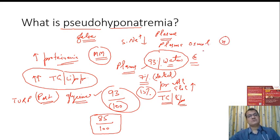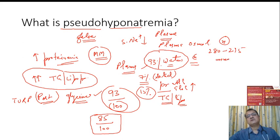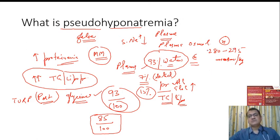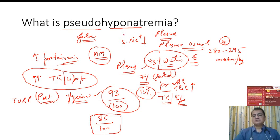With normal plasma osmolality — calculated as 2 × sodium + glucose/18 + BUN/2.8, with a normal range of 282 to 295 milliosmoles per kg — plasma osmolality tends to be absolutely normal in pseudo-hyponatremia conditions.